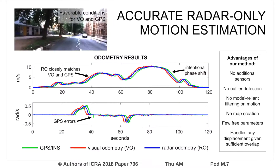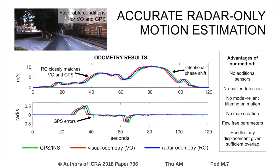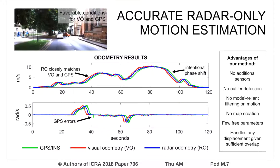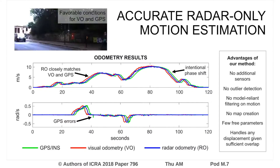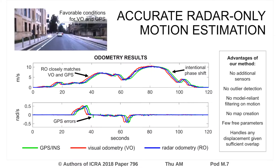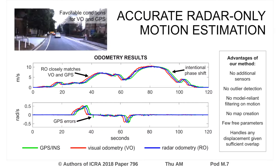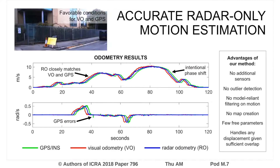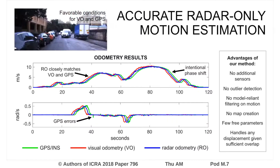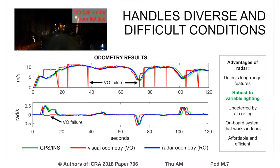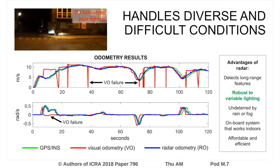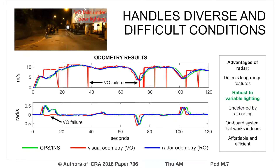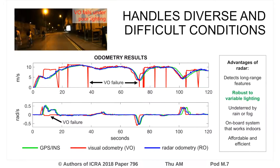Here we see that radar odometry closely matches the results of visual odometry and GPS-INS under favorable conditions for the latter two sensors. Radar odometry is also able to handle diverse and difficult conditions.